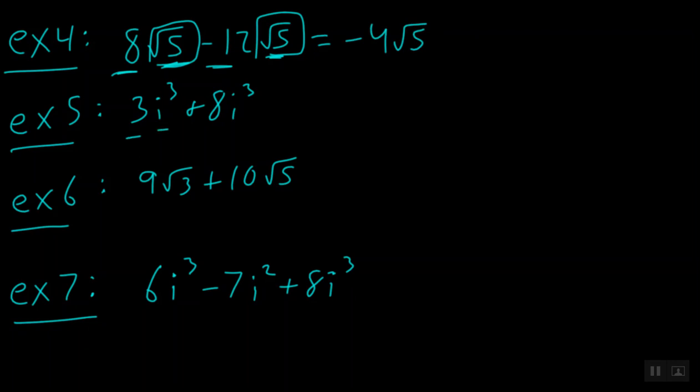What about 3i squared plus 8i squared? Notice that these are both i squared, I'm sorry, i cubes. They're both i cubes, and so 3 plus 8 will give us 11i cubed.